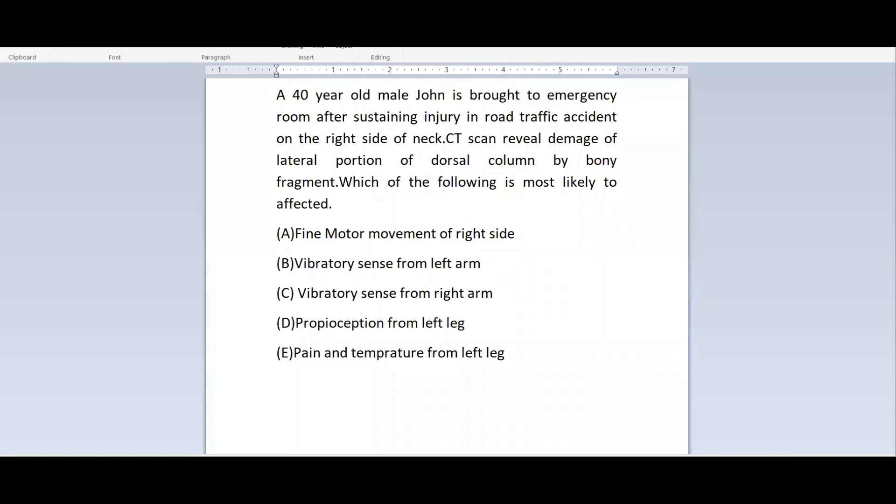The right option of this clinical vignette is vibratory sense from the right arm, because the lesion lies at the level of the spinal cord. If the lesion is above the medulla, because the crossing over takes place above the level of the medulla, then it will be the vibratory sense from the left arm.